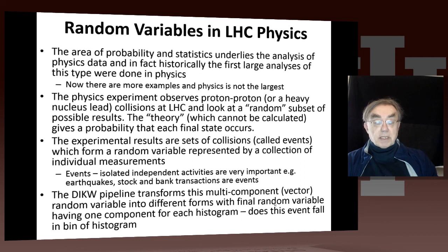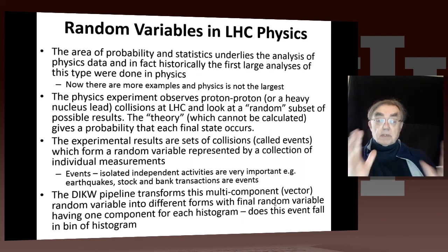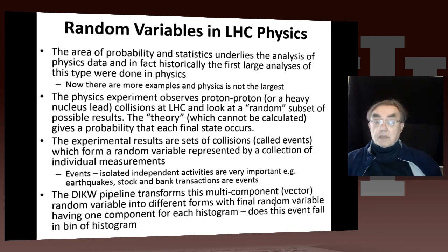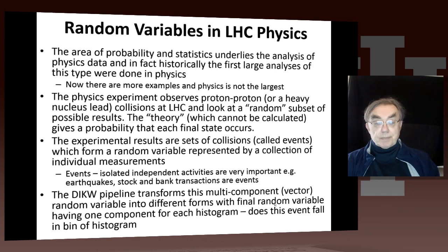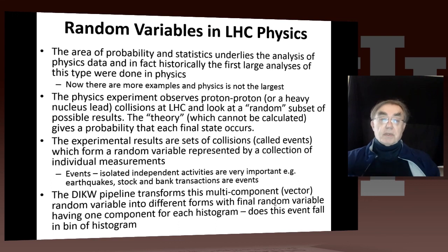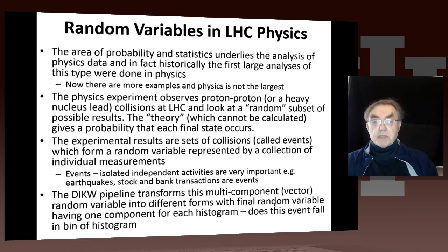Then we have our famous data-information-knowledge-wisdom pipeline, which transfers this raw data into the wisdom that the Higgs boson exists, starting with the data which is what happens when those protons collide at the LHC. At each stage of that analysis, you're taking events and converting them to new types of events with transformations — those are new types of random variables related to the old random variables. At each stage you retain the independence between the different collisions, but there are of course huge correlations within the results of a single collision.